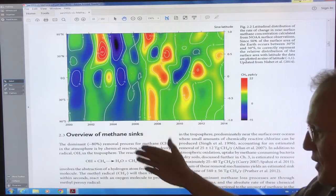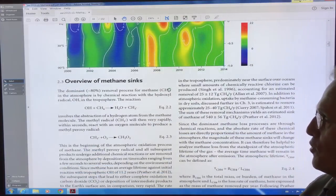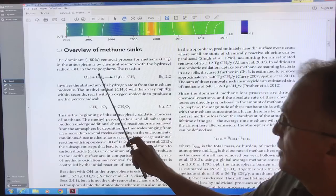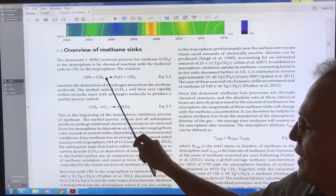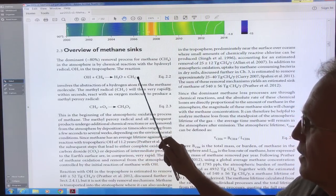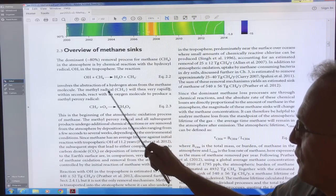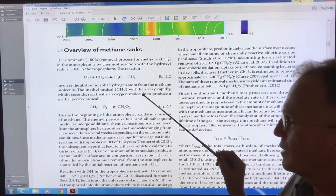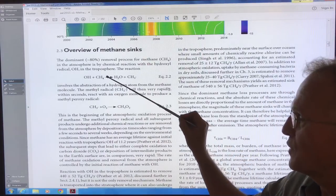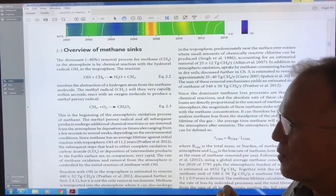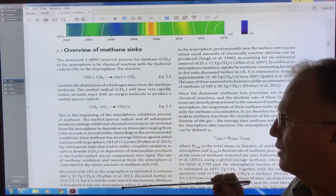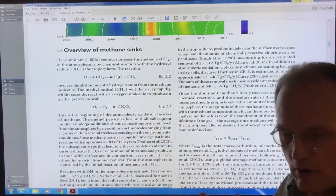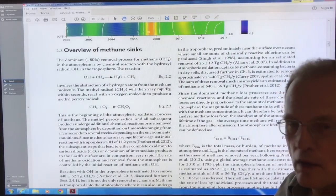So we're looking at the methane sinks here. What removes methane from the atmosphere? The hydroxide molecule, OH, reacts with methane producing water and this methyl radical CH3. This is a dominant removal mechanism for methane from the atmosphere. When we're up in the stratosphere, this water produced seeds the stratosphere with water.